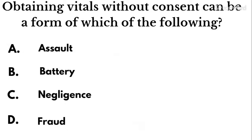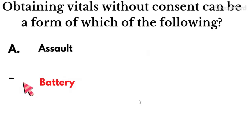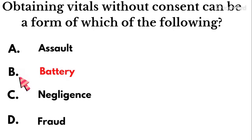Question nineteen: Obtaining vitals without consideration of consent can be a form of which of the following — assault, battery, negligence, or fraud? The correct answer is battery. Assault is the attempt or threat to touch or cause harm. Negligence is the failure to provide reasonable service. Fraud is falsifying information — outright lying. Obtaining vitals without patient consent is battery.